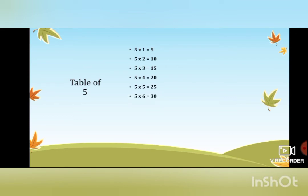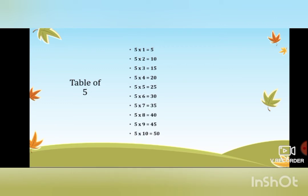Five sixes are 30, five sevens are 35, five eights are 40, five nines are 45, five tens are 50. Let us say it one more time.